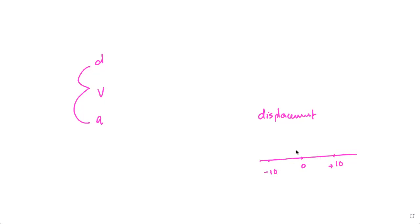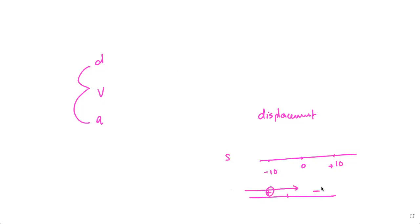Now talking about velocity: if velocity is positive, it means you're moving towards the right. If velocity is negative, it means you're moving towards the left of the origin.